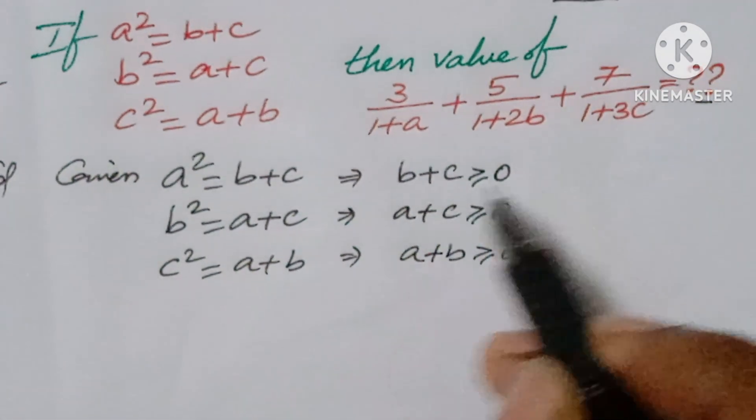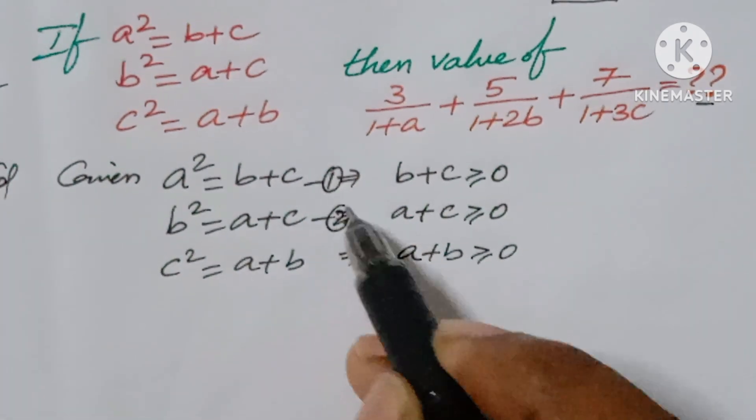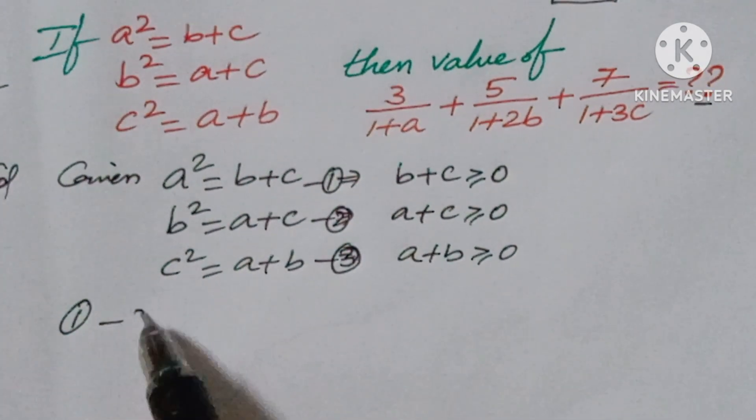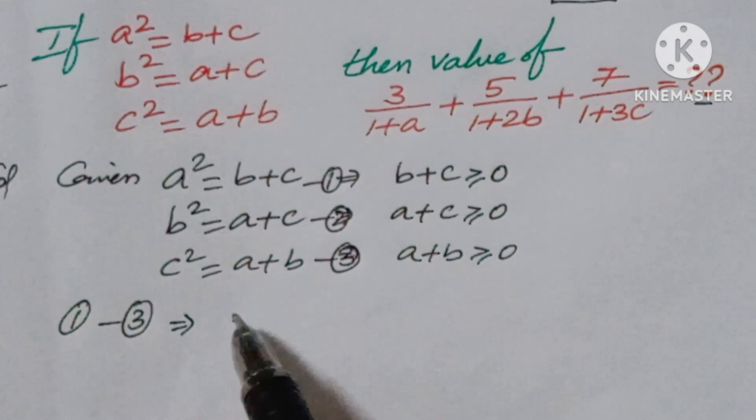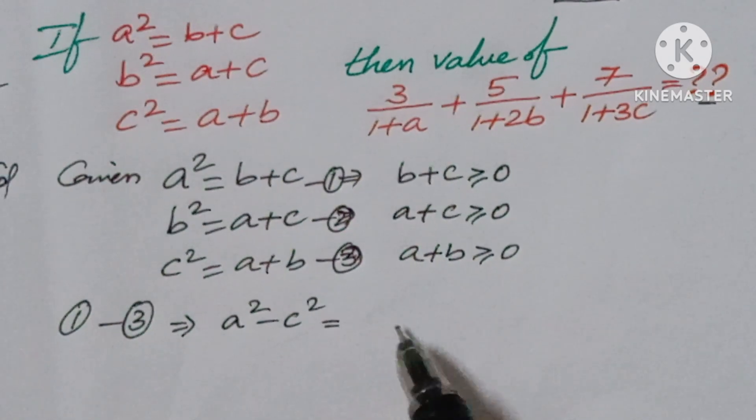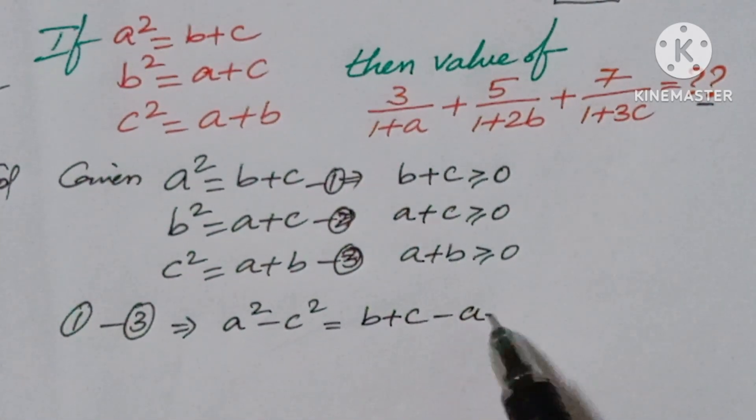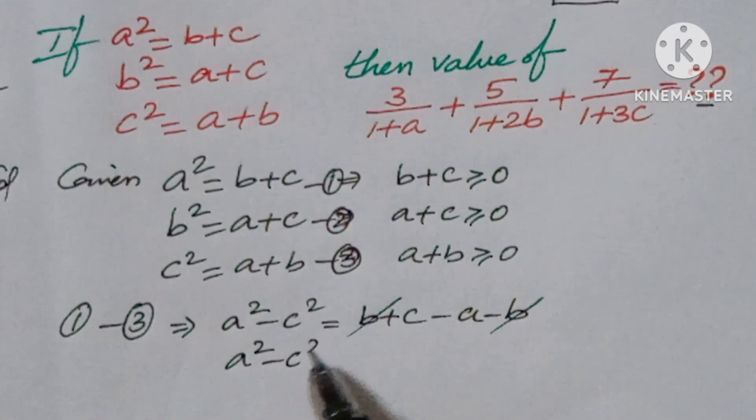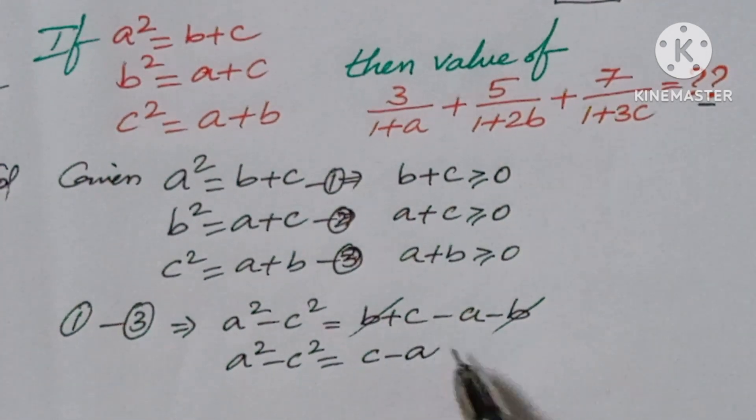Now let us take it as equation 1, this is 2, and this is 3. Now 1 minus 3 is equal to a² minus c² is equal to b + c minus a minus b. b gets cancelled, a² minus c² is equal to c minus a.